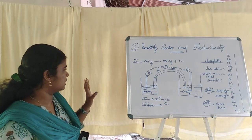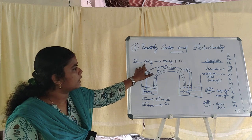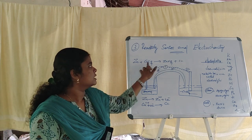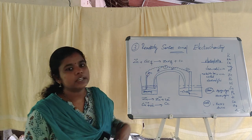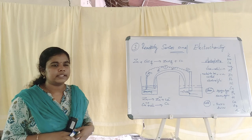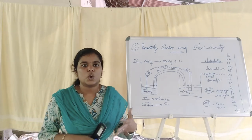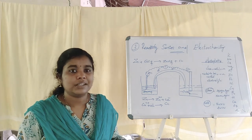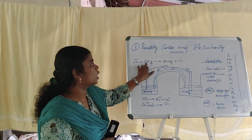Fe + CuSO₄ gives FeSO₄ + Cu. We have to explain this equation. CuSO₄ is a reactant. This is a displacement reaction — it is based on the reactivity of the metal. Iron displaces copper from the copper sulfate solution, producing a new product.